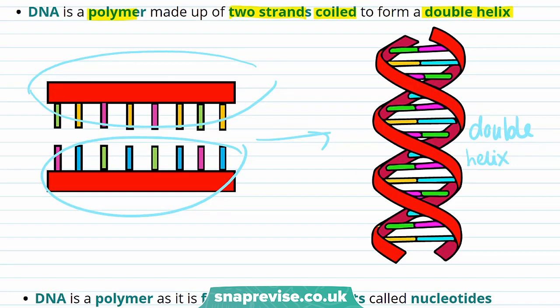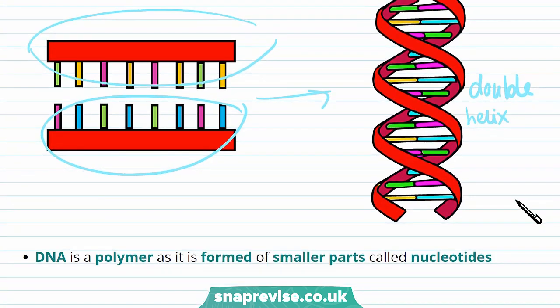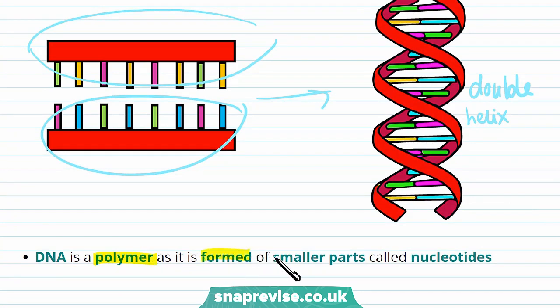So what did I mean when I said DNA was a polymer? Well, a polymer just means it's formed of lots of little bits, and DNA is a polymer as it's formed of smaller parts called nucleotides, and I'll go through what this is in this video.